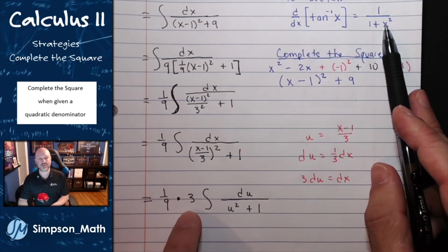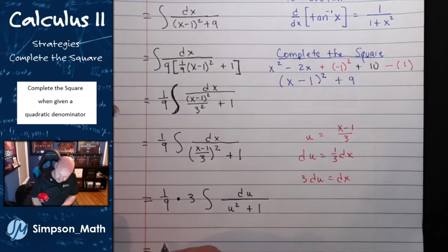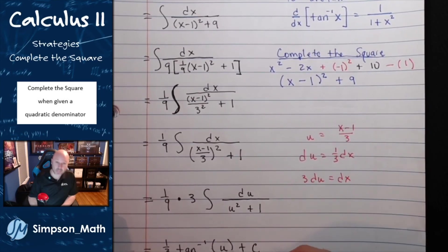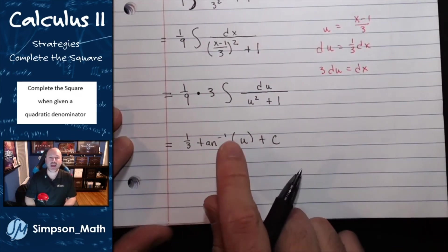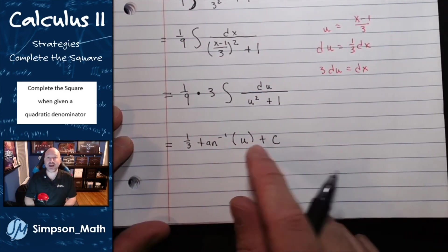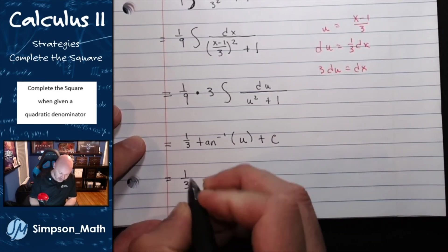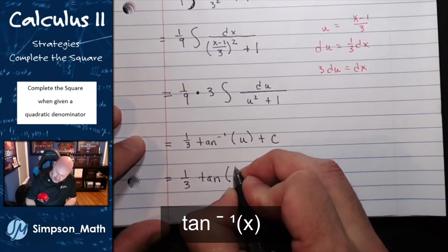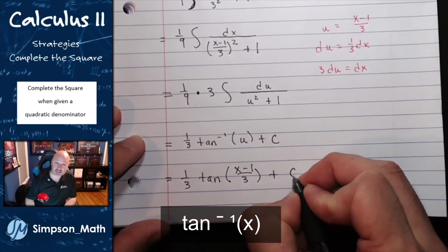So in my next step, I'll do this multiplication. I'll integrate this. And now I'm ready to change u back into x terms. And my final answer is 1 third tangent inverse of x minus 1 thirds plus some constant.